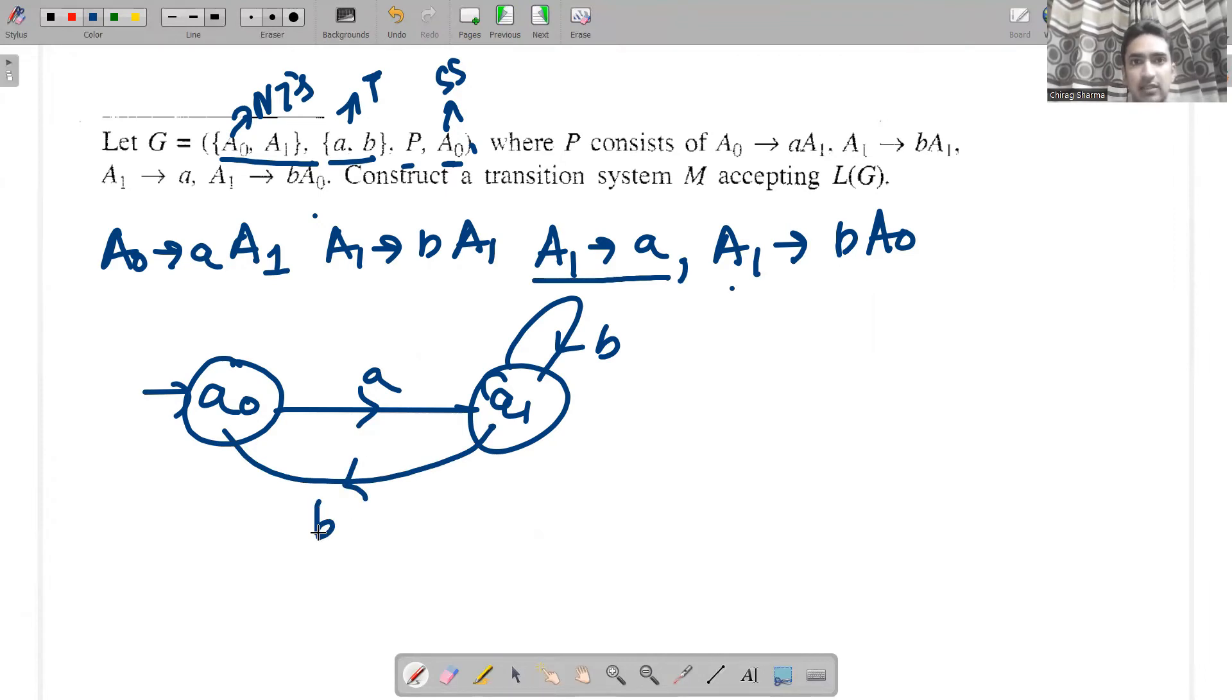These transition systems are designed accordingly. There is one rule saying A1 when given A goes to final state. If I write this rule, it means A0 can be a final state. But unfortunately, this is not possible. Why? Because for this rule to give us a final state, we must have a rule where A1 given A goes to A1.